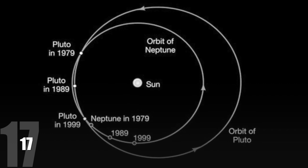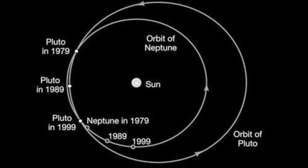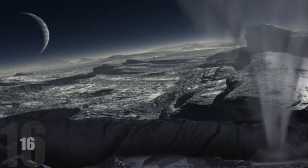Due to Pluto's strange orbit, for a few years at a time, Pluto's orbit overlaps with Neptune's. 16.